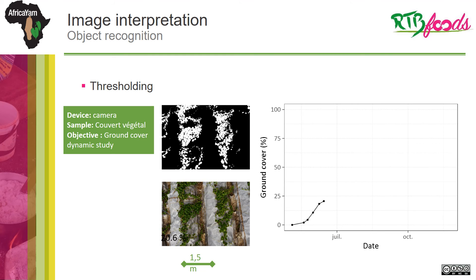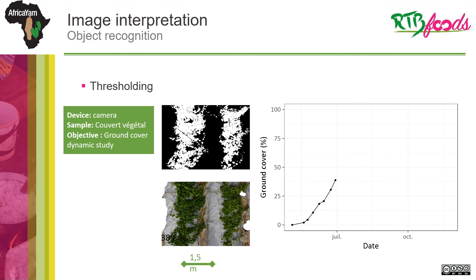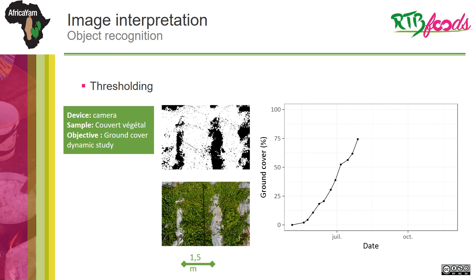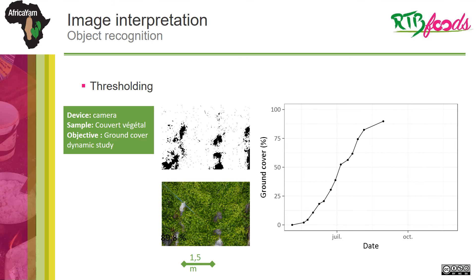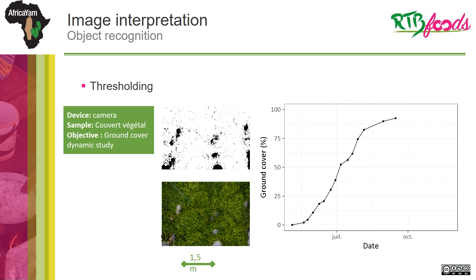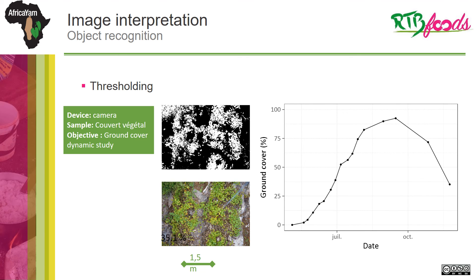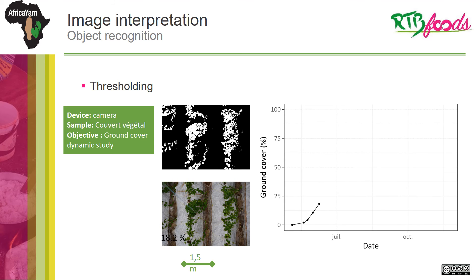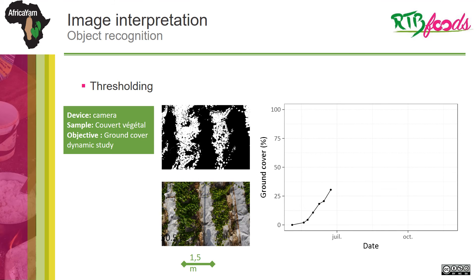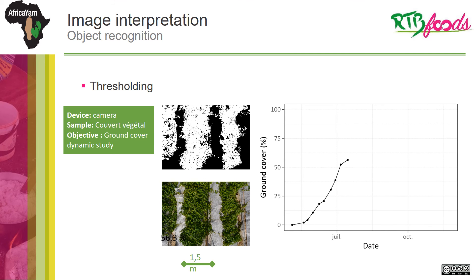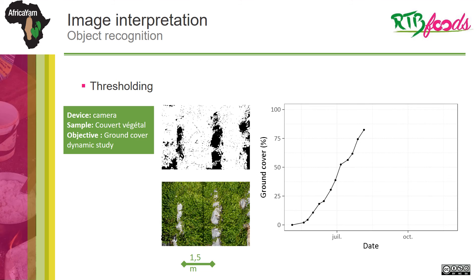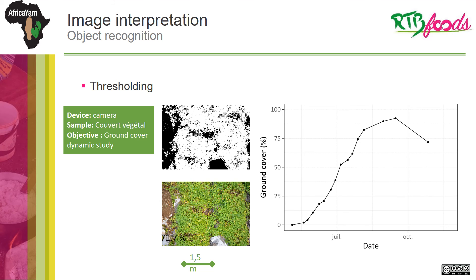Thresholding is another useful technique for image analysis. It allows to separate pixels of interest from their background using color threshold values. It allows, for instance, to distinguish yam cover from soil in order to study yam ground cover dynamics.